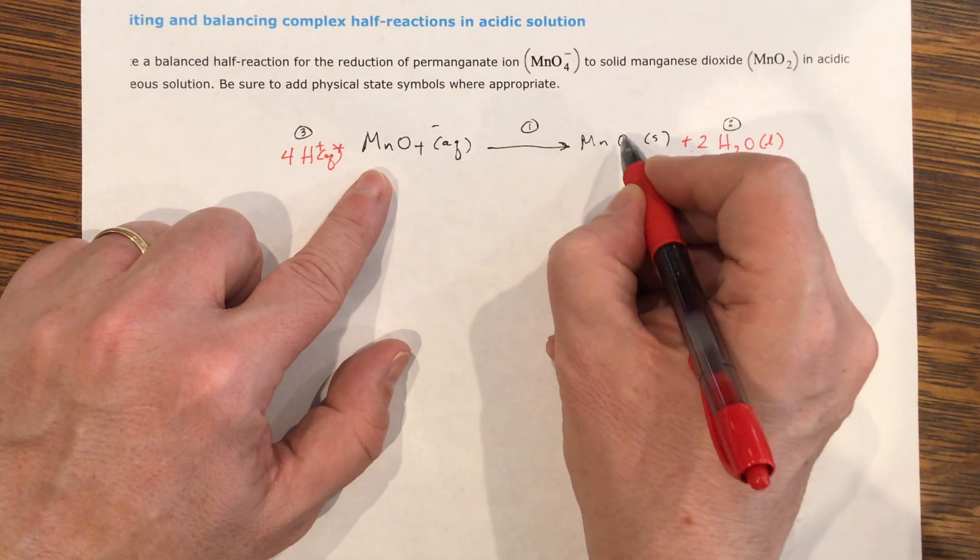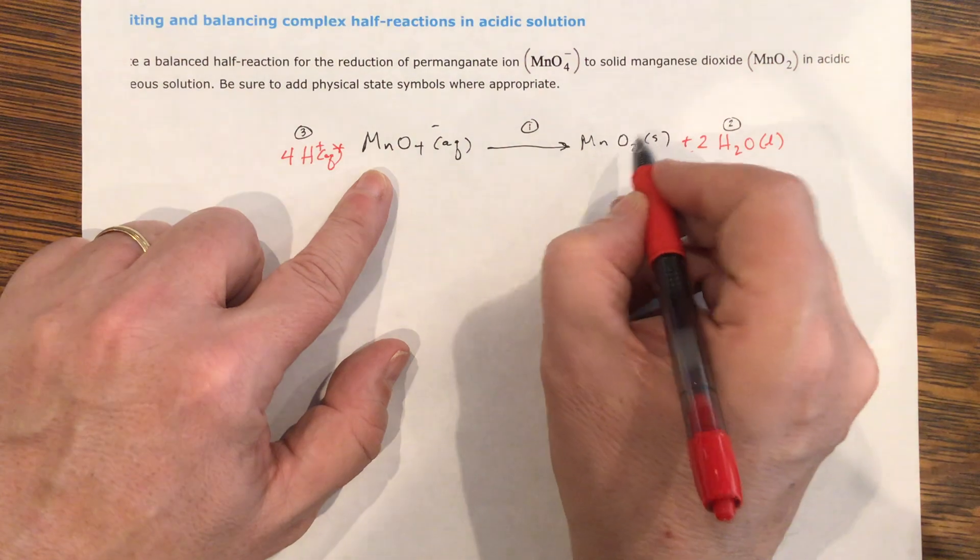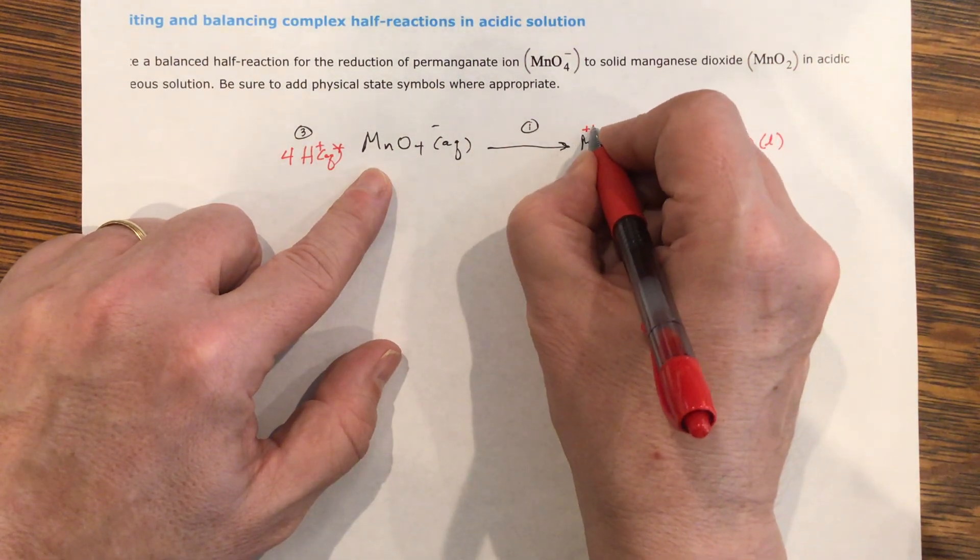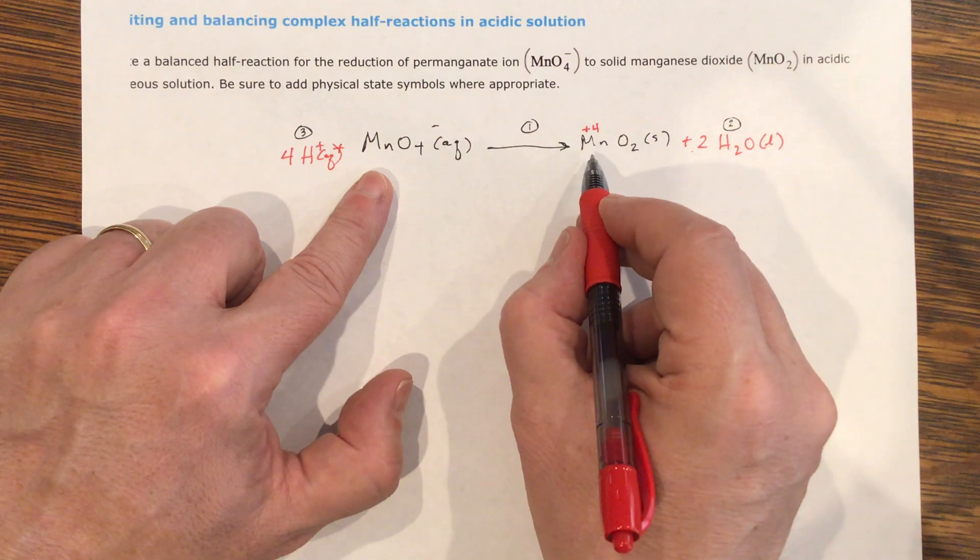So oxygen is negative two. So there's two negative twos. This balances with two negative twos. That means that this has to be plus four. That's my oxidation number for manganese here.